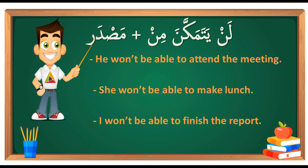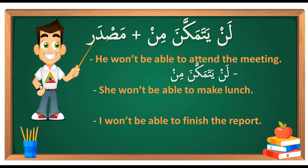Look at this example: 'He won't be able to attend the meeting.' Because it's 'he,' we say لن يتمكن من, then attend the meeting: حضور الاجتماع. حضور is the Masdar, الاجتماع means 'the meeting.' So the full sentence is: لن يتمكن من حضور الاجتماع.